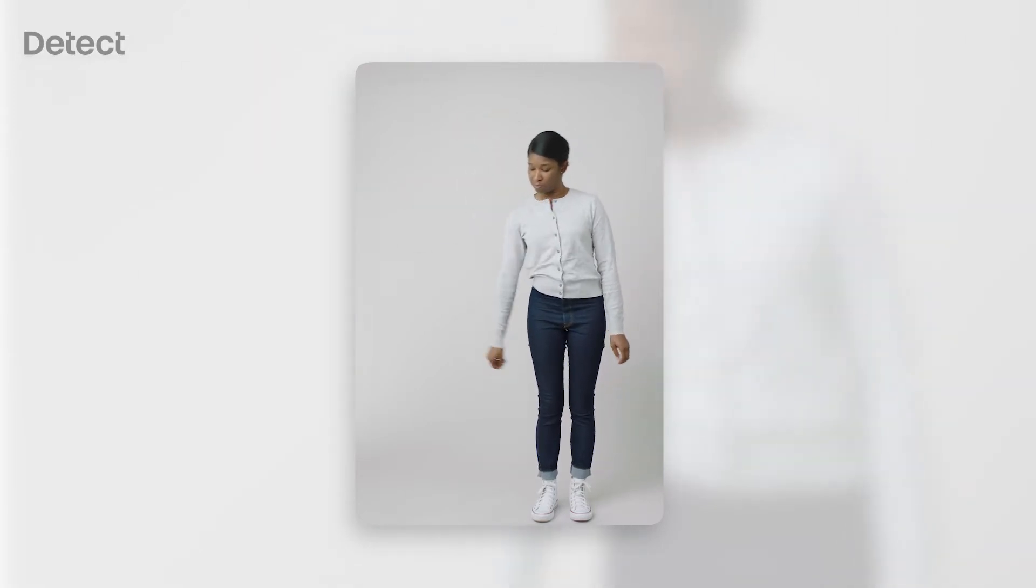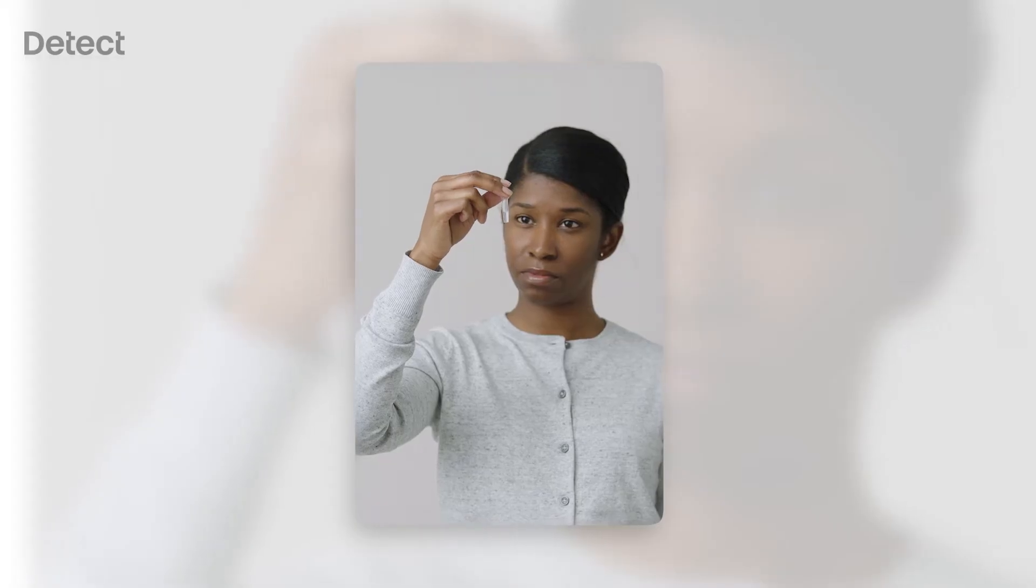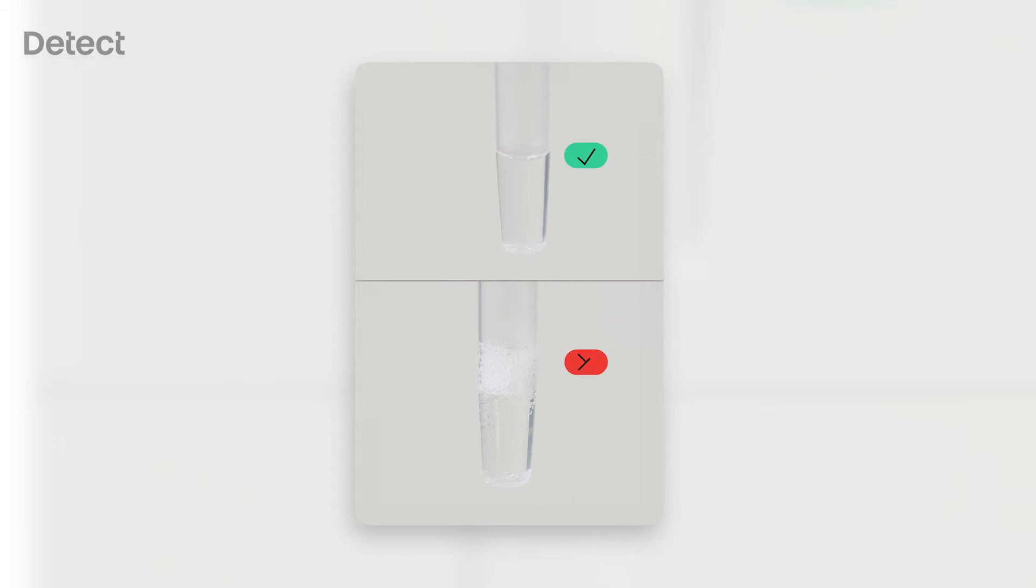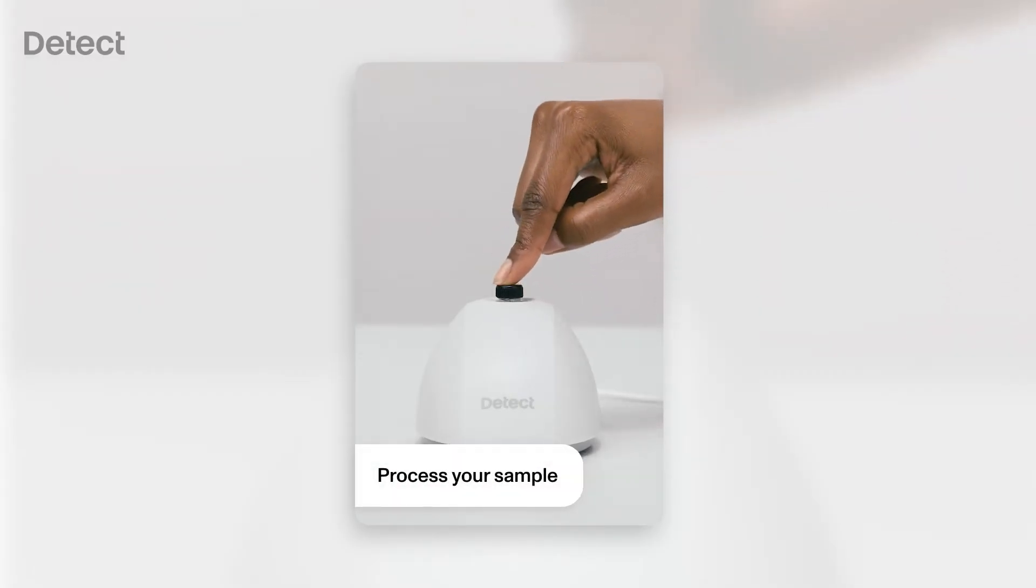Forcefully bring down your arm to collect all the liquid at the bottom of the test tube. No liquid should remain at the top of the tube. Place the test tube into the well of the Detect Hub. The Detect Hub will beep once and the green light will start blinking. Set a timer for 55 minutes so your sample can process.